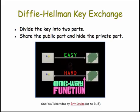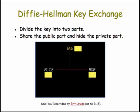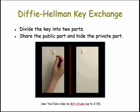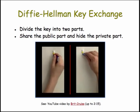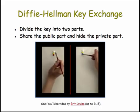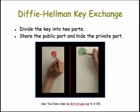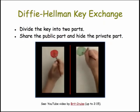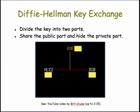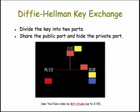The solution works as follows. First, they publicly agree on a starting color, say yellow. Next, Alice and Bob both randomly select private colors and mix them into the public yellow in order to disguise their private color. Alice keeps her private color and sends her mixture to Bob, and Bob keeps his private color and sends his mixture to Alice.